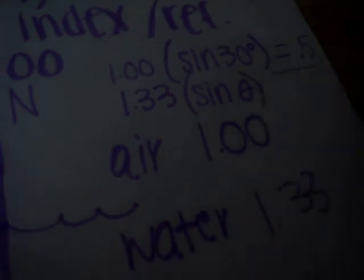So next step you're going to do is divide 0.5 by 1.33 to solve for the sine of theta. So now we'll go over here because we're running out of room. It's 0.3759, and that's going to be equal to the sine of theta.